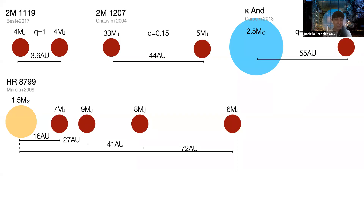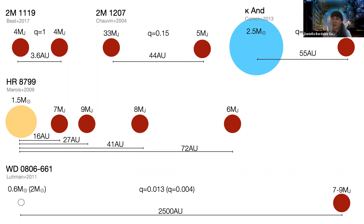HR 8799 — if it's not your favorite planetary system, it probably should be. It's really interesting — we have four very massive Jupiter-like planets at different separations. Another puzzling system is 2M0806, a favorite among brown dwarf scientists. The companion is a Y dwarf — very few of these exist, they're extremely faint and cold. It's orbiting a white dwarf, so we don't exactly know the mass of the progenitor star, but models suggest it's probably around two solar masses, making this a very extreme mass ratio at very large separation.